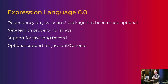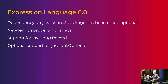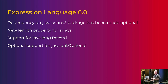For expression language, the one big change is that there is no longer a mandatory dependency on the Java Beans package. Some people won't care about that, but others will find it really useful for writing applications using the Java Platform Module System. Previously, expression language required Java Beans, which pulled in the entire Java desktop module — which is huge. Now expression language won't do that unless you explicitly say you need Java Beans. If it's there it will use it; if not, it will use its own internal implementation instead.